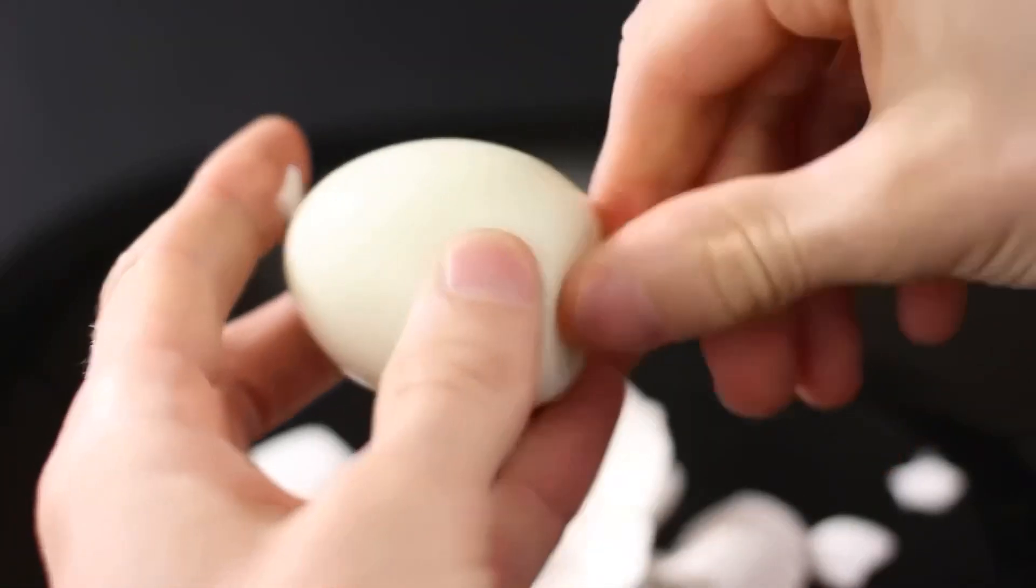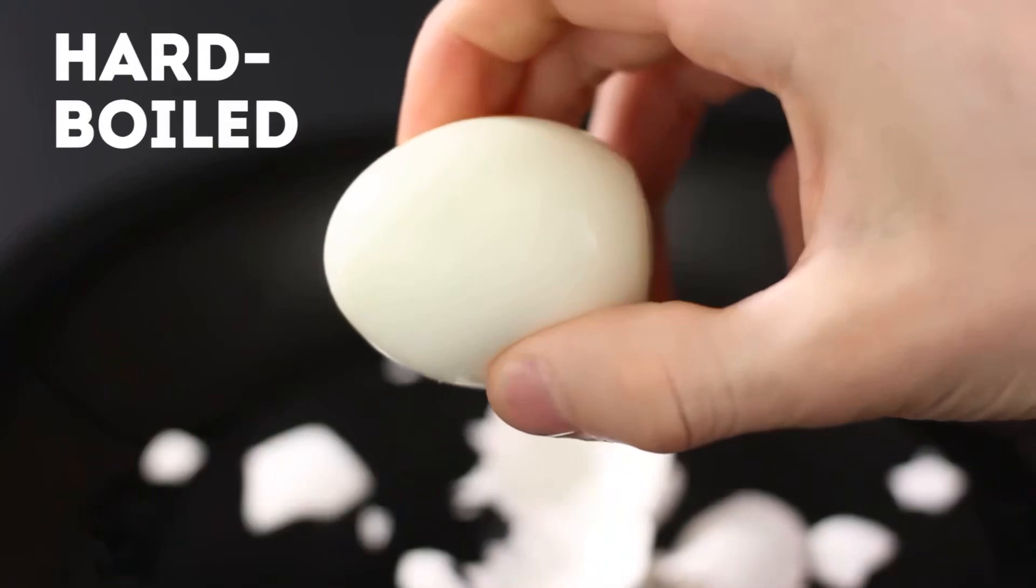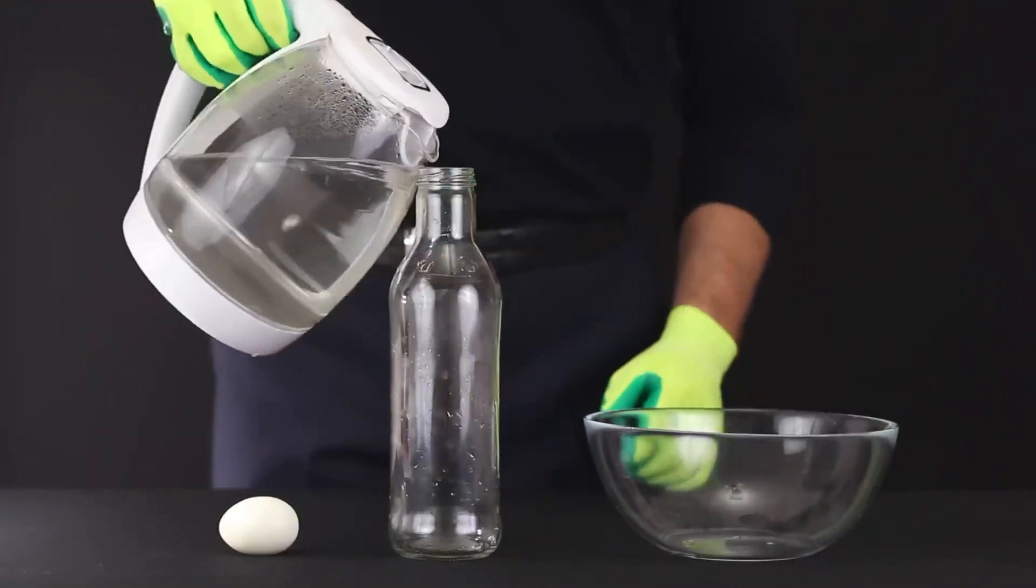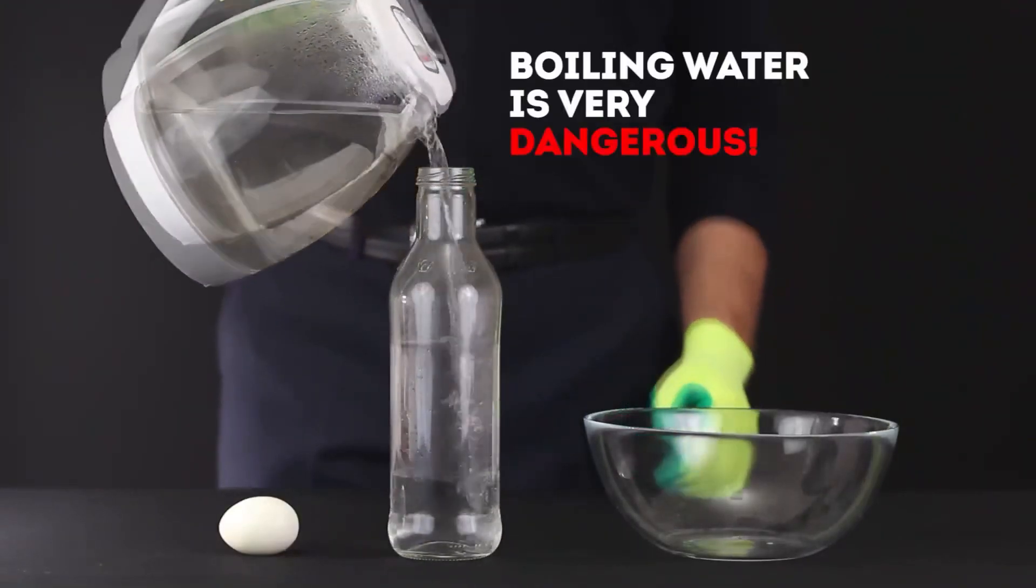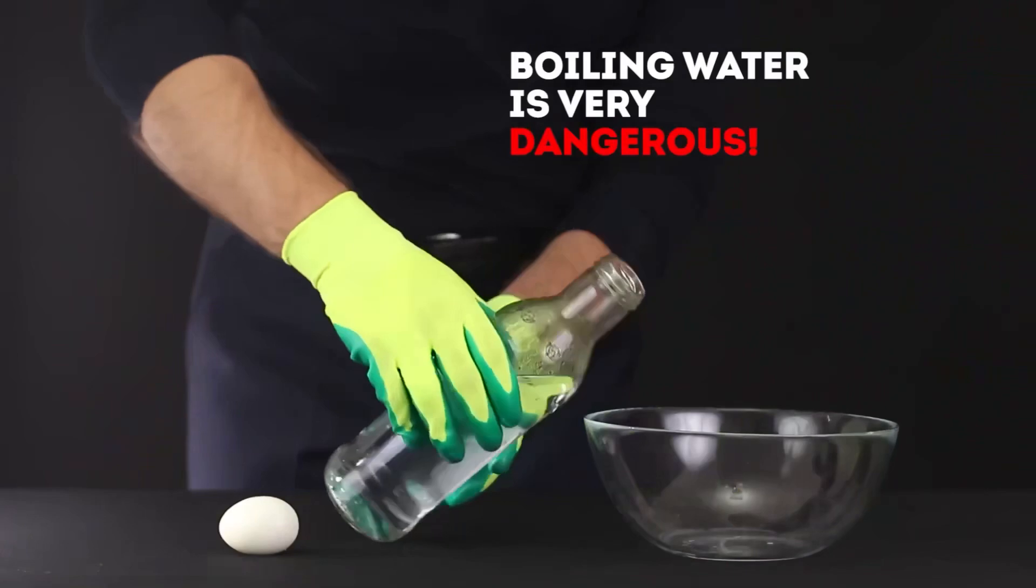This time, we will use boiled eggs, hard-boiled and peeled from the shell. Boil your water in a kettle. Be careful with the boiling water. Pour it into a bottle. And when it heats up, pour it into a bowl.